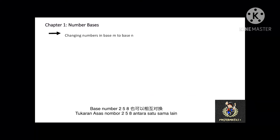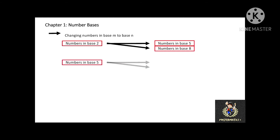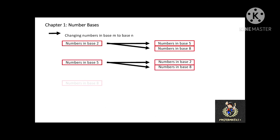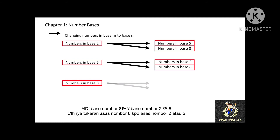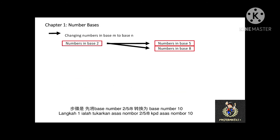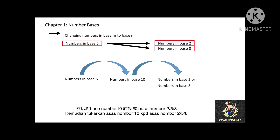Base numbers 2, 5, and 8 can also be converted to each other. For example, a number in base 2 can be converted to base 5 or base 8; a number in base 5 can be converted to base 2 or base 8; and a number in base 8 can be converted to base 2 or base 5. The first step is to convert the number in base 2, 5, or 8 into base 10. Then, from the base 10 number, use the method of repeated division to convert it to base 2, base 5, or base 8.